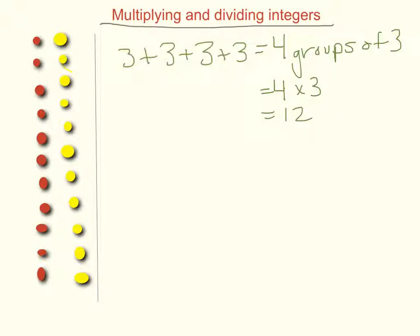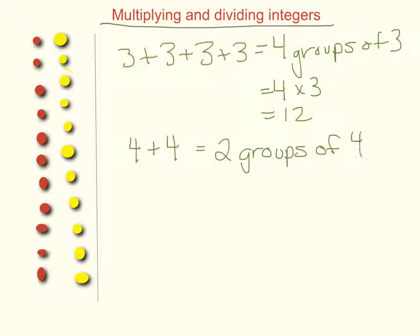And the same if we added 3 plus 3 plus 3 plus 3, just as addition, we'd come to 12. If we had 4 plus 4, we could say 2 groups of 4, and also 2 times 4, and that's 8.